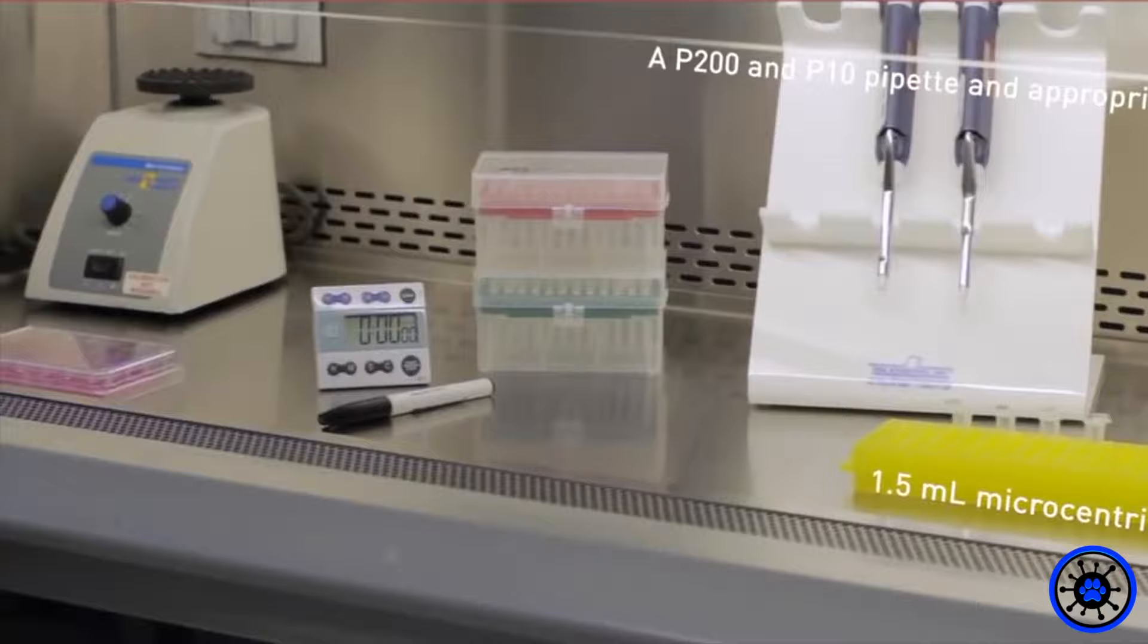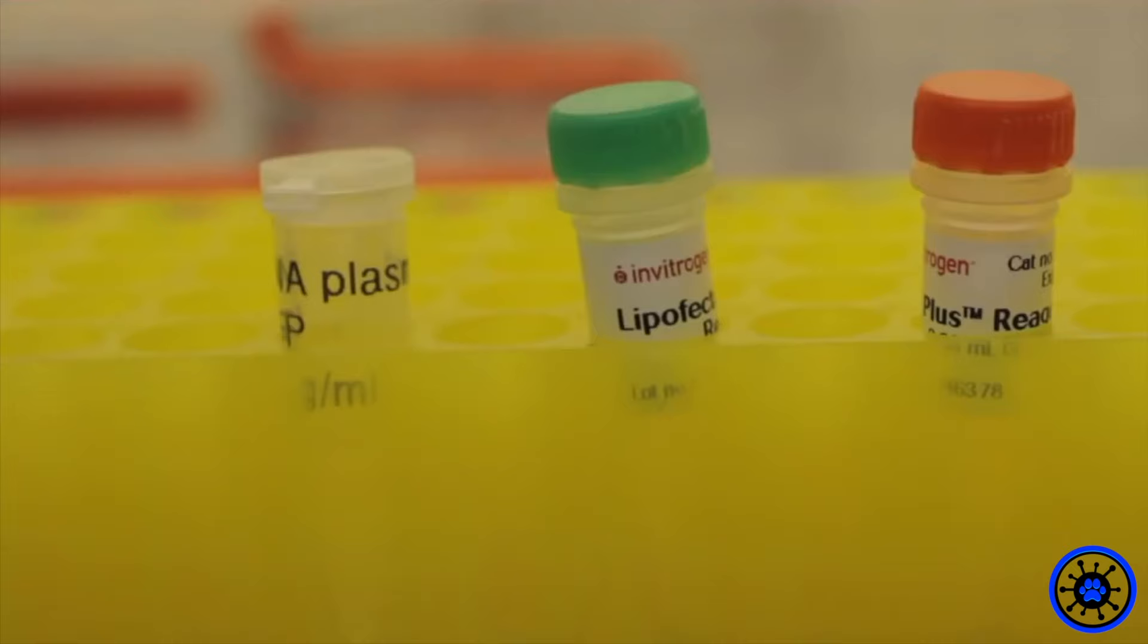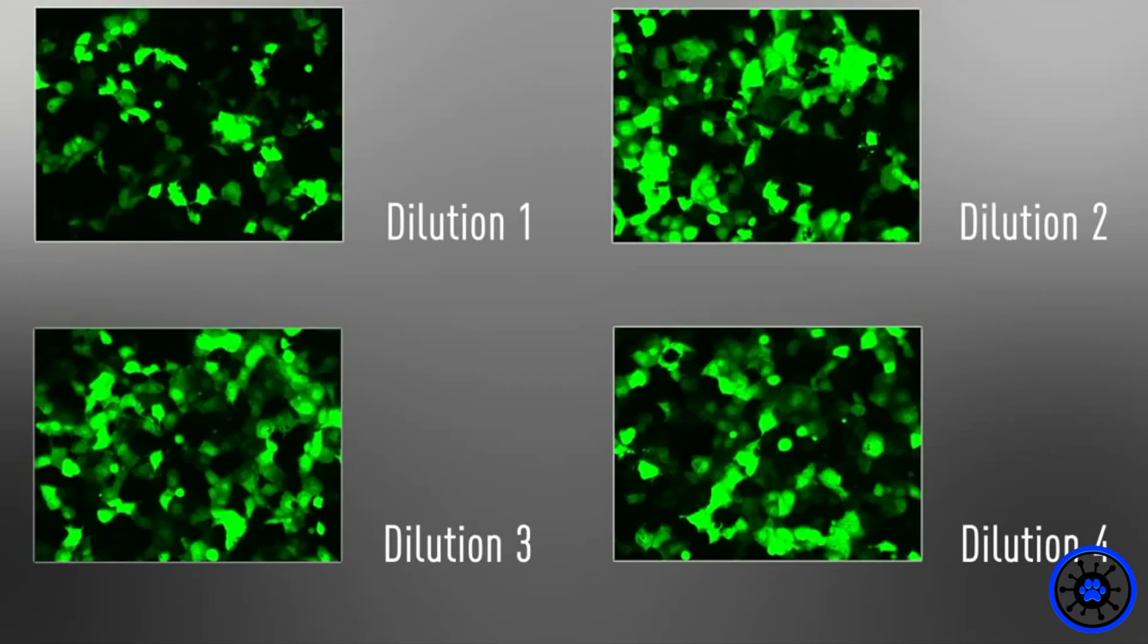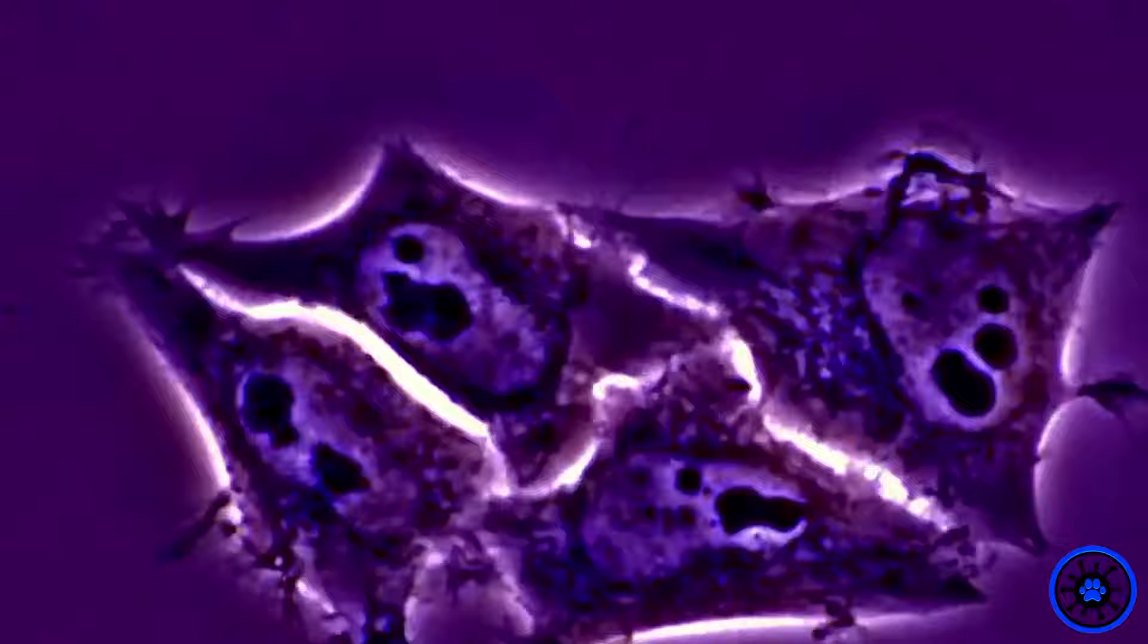This experiment was designed as an exercise in culturing and transfecting HELA cells with a plasmid and confirming insertion. The plasmid consists of green fluorescent protein and a selectable marker that confers resistance to an antibiotic. Only cells that have the plasmid inserted will survive the antibiotic treatment and express the green fluorescent protein.